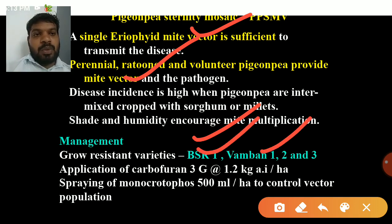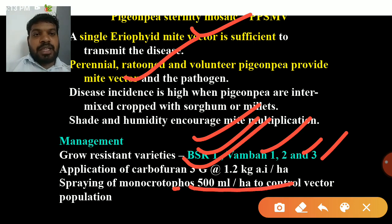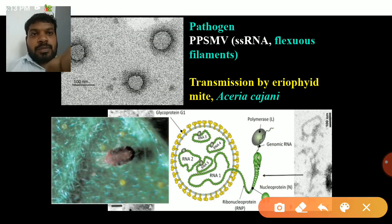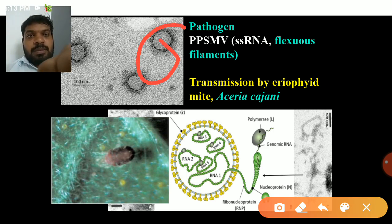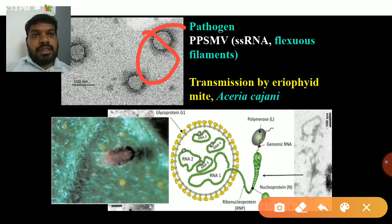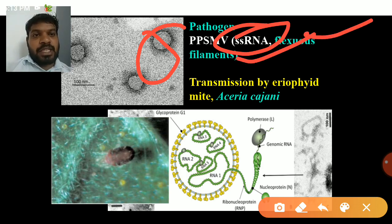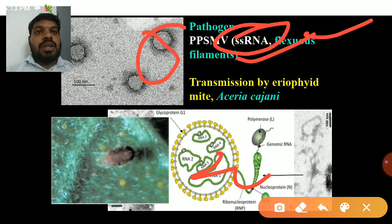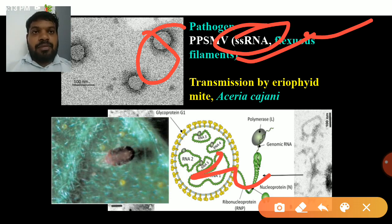Management: grow resistant varieties such as Bhavani Sagar 1, Mambam 1, 2, and 3. Apply carbofuran 3G at 1.2 kg active ingredient per hectare. Spray monocrotophos per hectare. The virus is spherical in shape with a coat protein, and it is a single-stranded RNA virus with a filamentous RNA structure. The shape of PGNP sterility mosaic virus is spherical.